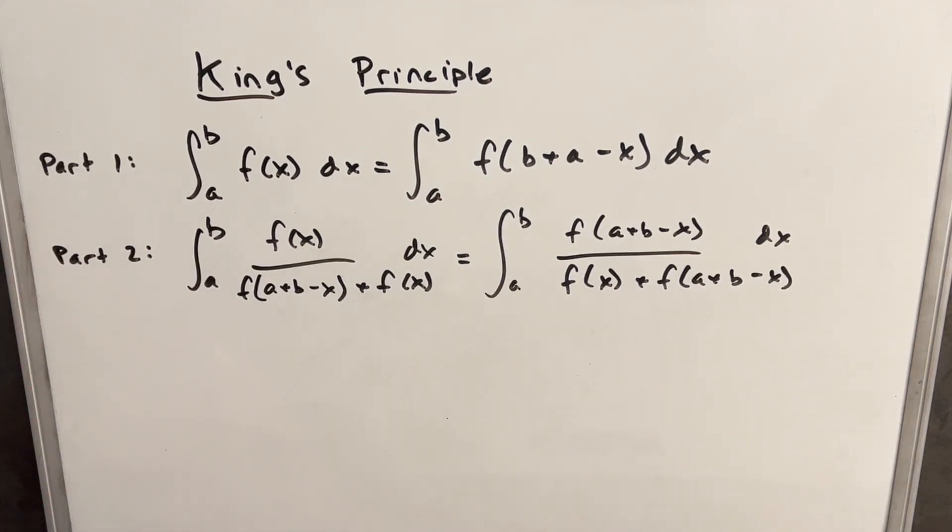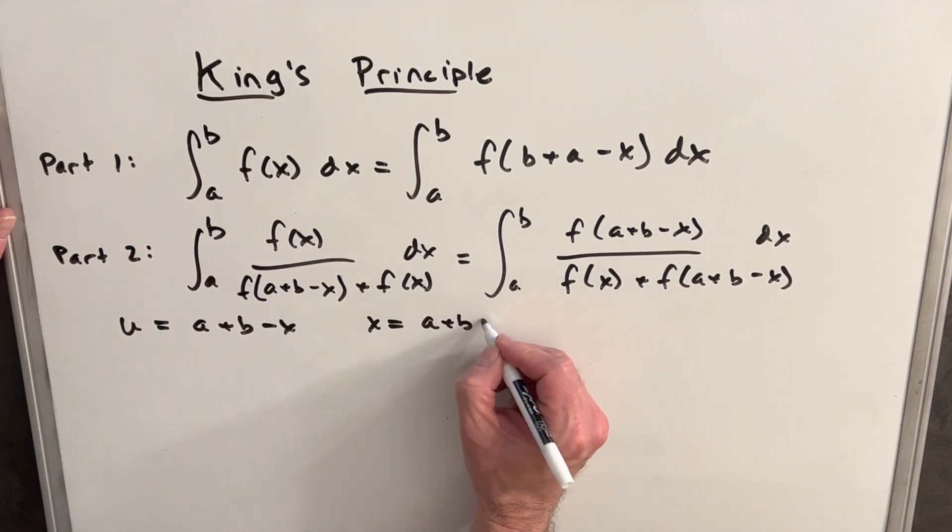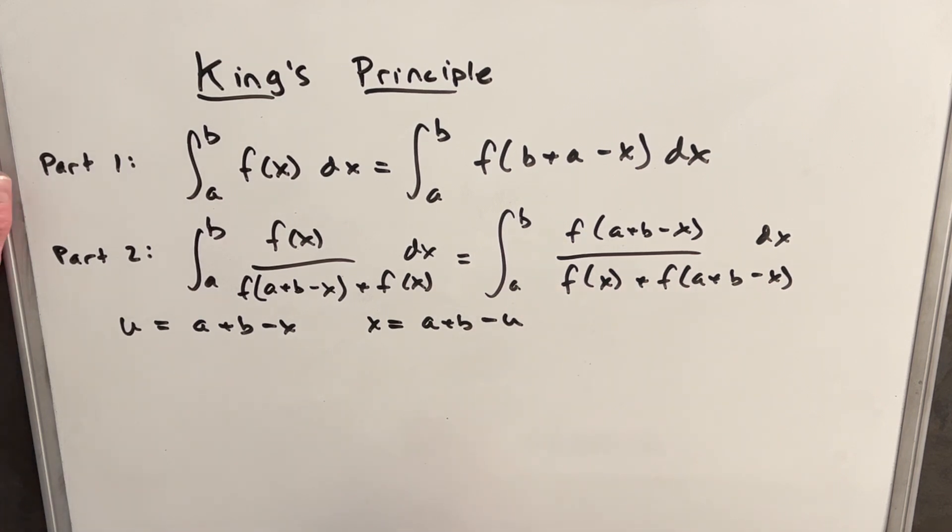Okay, so for part two, I think what we're going to do, just to make it really clear, is just do the same u substitution again, essentially. We'll do u = a + b - x, and then we had from before, this is going to be x = a + b - u. Our dx is minus du.